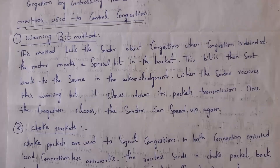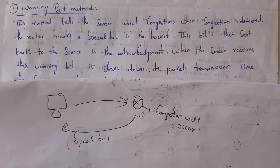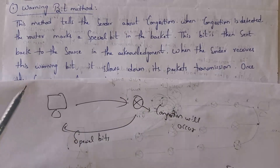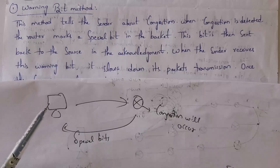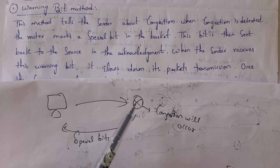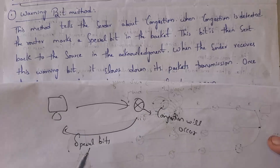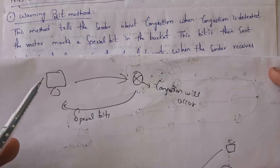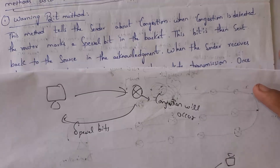Next, various methods are used to control congestion. The first one is the warning bit method. For example, there are many devices transferring data through a router, and a particular computer is sending too much data. Since congestion is likely to occur, the router will send a special bit as an acknowledgement — this special bit is known as a warning bit. Whenever the computer receives the warning bit, it understands that congestion is likely to occur and begins to send data packets more slowly. This is known as the warning bit method.